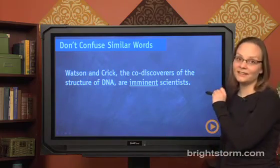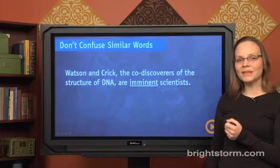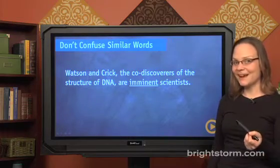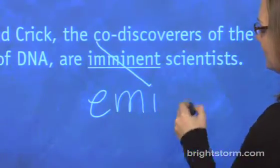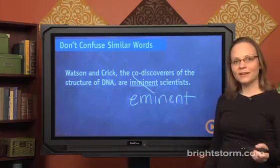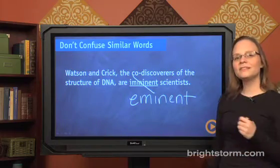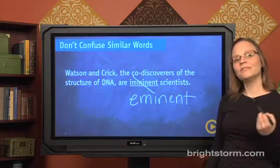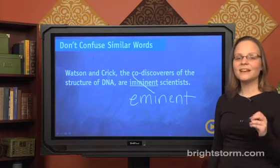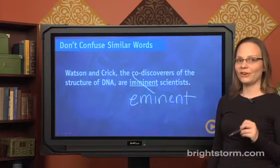Let's look at another example: 'Watson and Crick, the co-discoverers of the structure of DNA, are imminent scientists.' 'Imminent' is a pretty obscure word, but you can get familiar with many of the words tested on this portion by checking out the bonus materials where a lot of these word pairs are listed. In this case, 'imminent' spelled this way means 'about to happen,' and the scientists are not about to happen. Rather, you want the word 'eminent,' which means famous, well-known, and important.